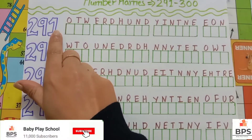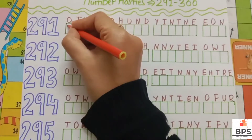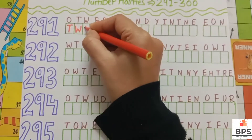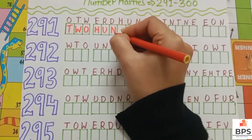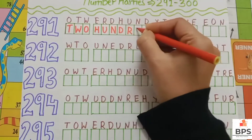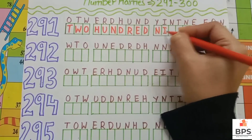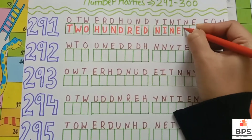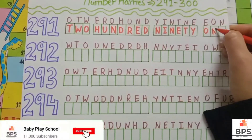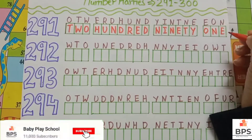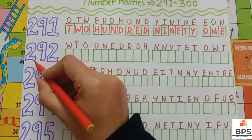Two nine one. Two hundred ninety one. T-W-O, two. H-U-N-D-R-E-D, hundred. N-I-N-E-T-Y, ninety. O-N-E, one. Two hundred ninety one.